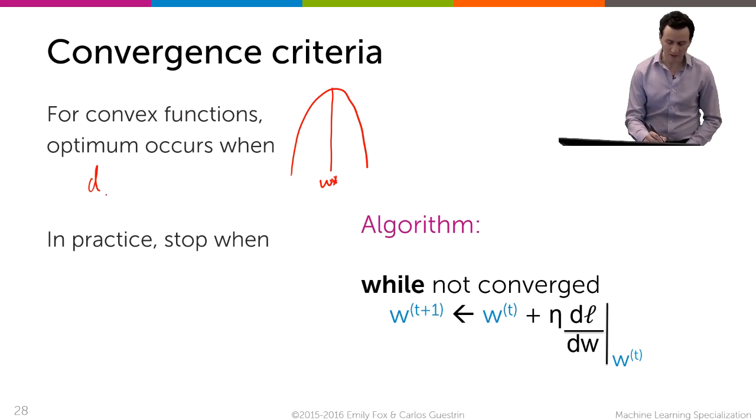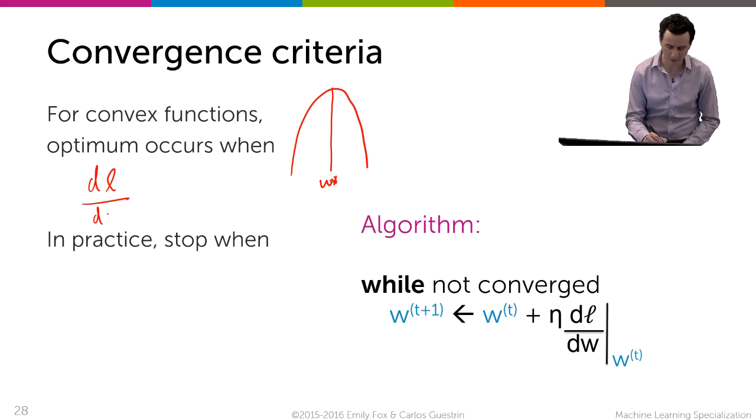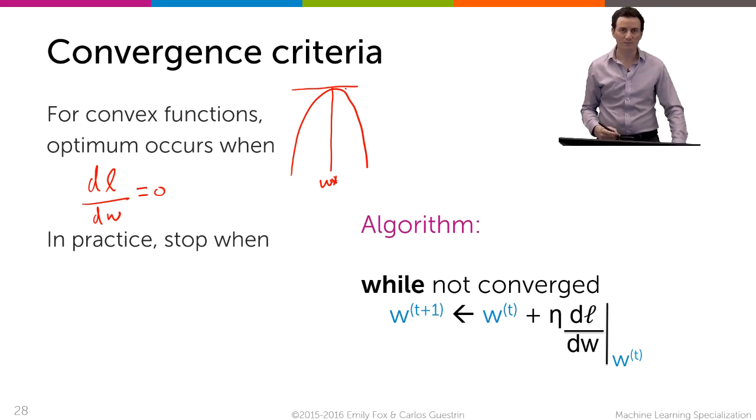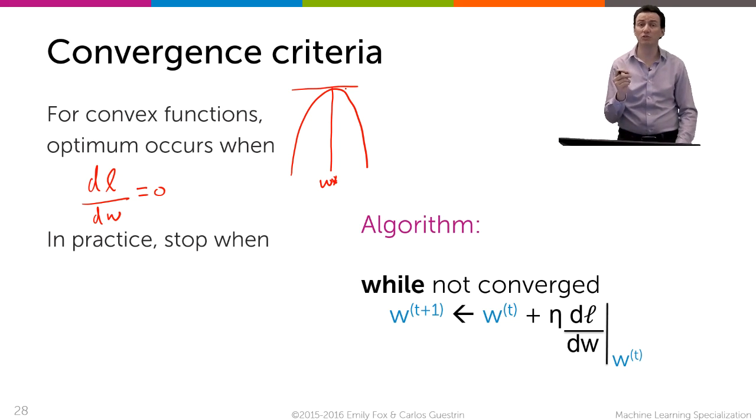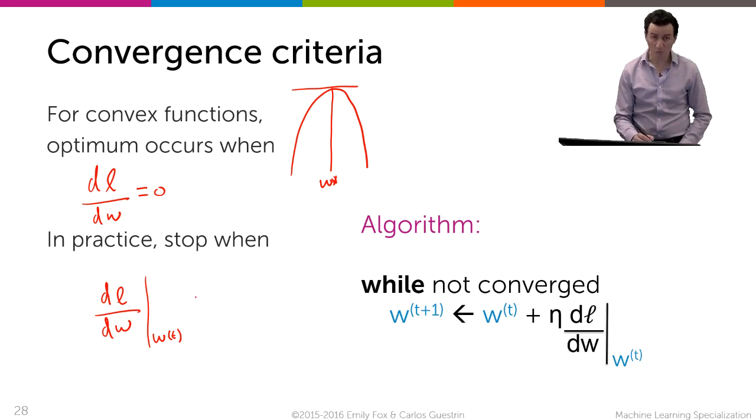So you might remember that at the optimum for convex functions, and what we're dealing with today is a convex function, and we talk quite a bit of detail what that means, but just in general we'll have that the derivative with respect to w of our likelihood is going to be equal to zero at the optimal here, because that curve flattens out. Now if we could get to the point where the derivative is equal to zero we'd be absolutely done. However, we're never going to get there exactly. So we're going to stop when the derivative is small enough. So we stop when the derivative with respect to parameter w computed at our current parameter w^t.